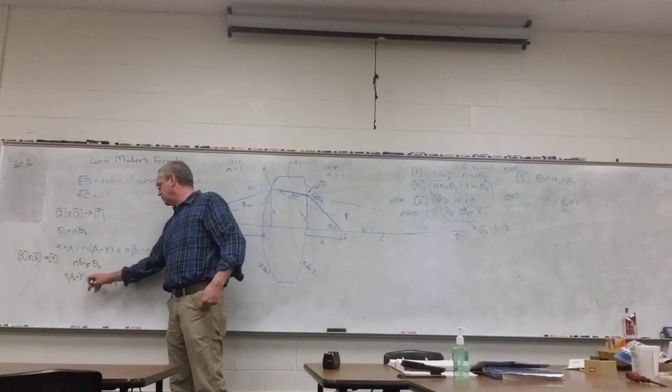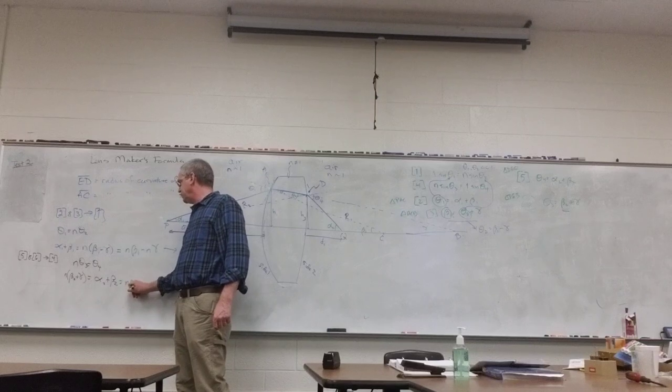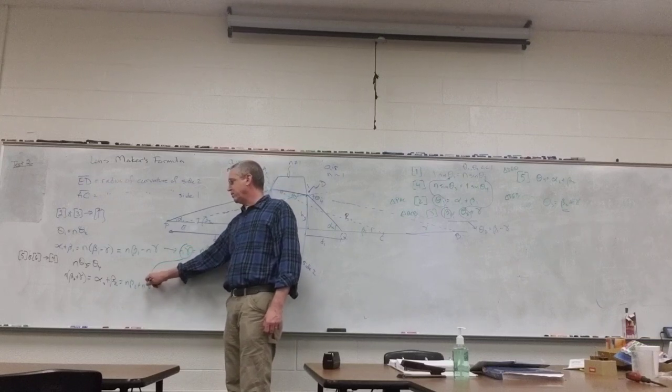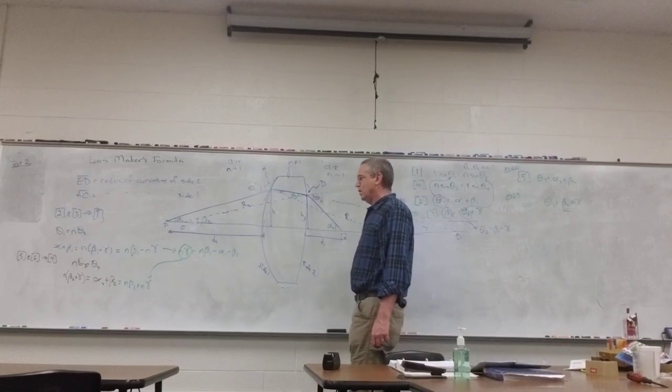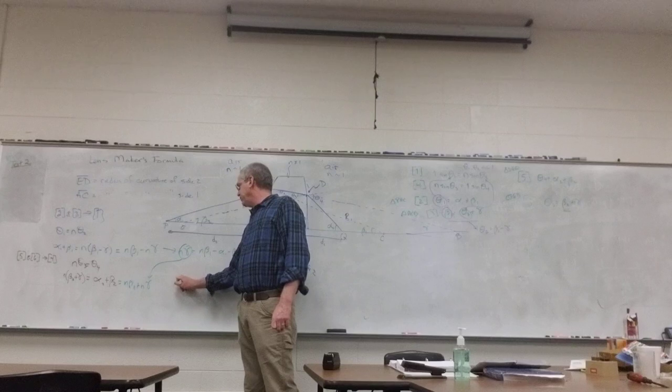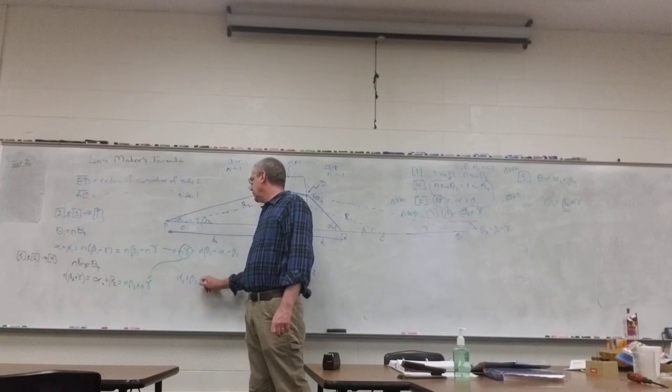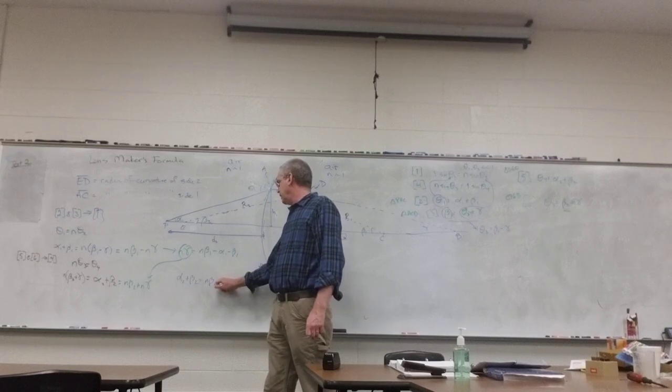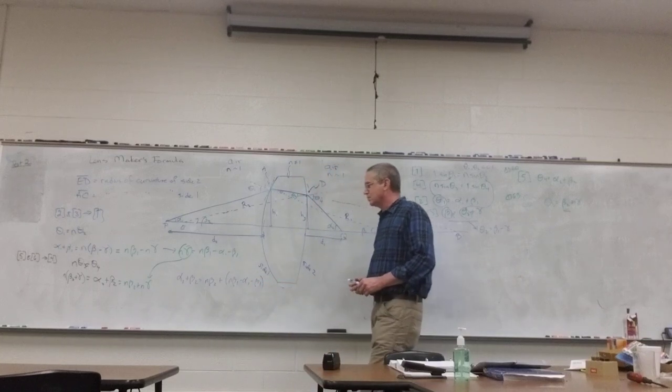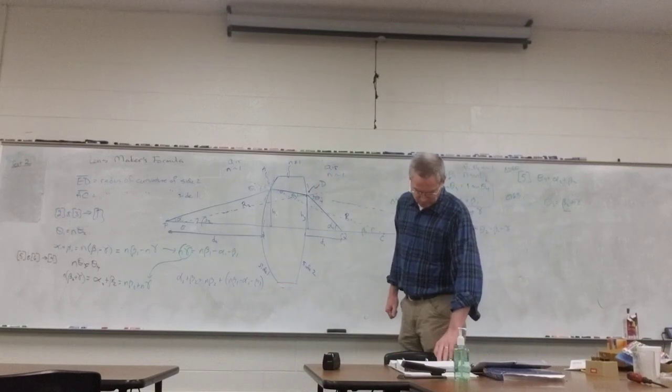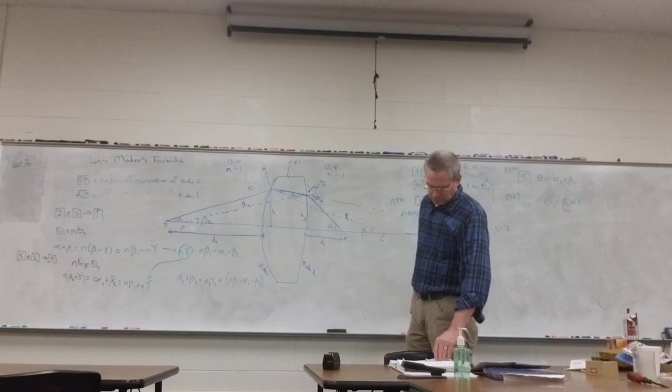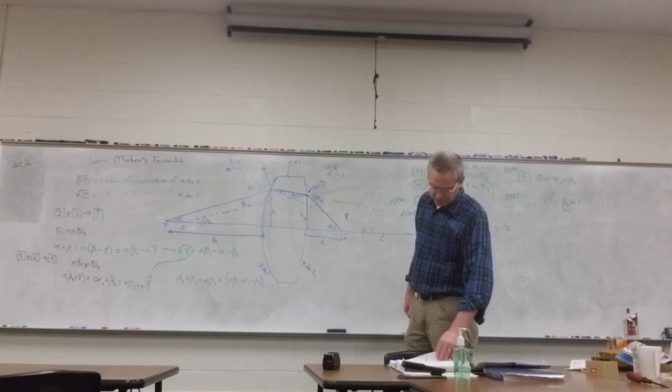Down here, I'm going to distribute over here. So that's n beta 2 plus n gamma. And I now have a formula for n gamma, I'll plug that right into there. So I have alpha 2 plus beta 2 equals n beta 2 plus n beta 1 minus alpha 1 minus beta 1. Just make sure I don't have a sign in the wrong spot.